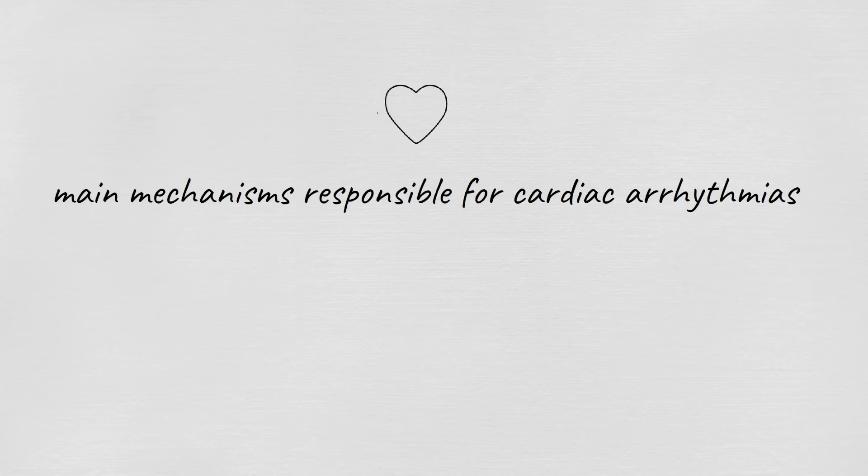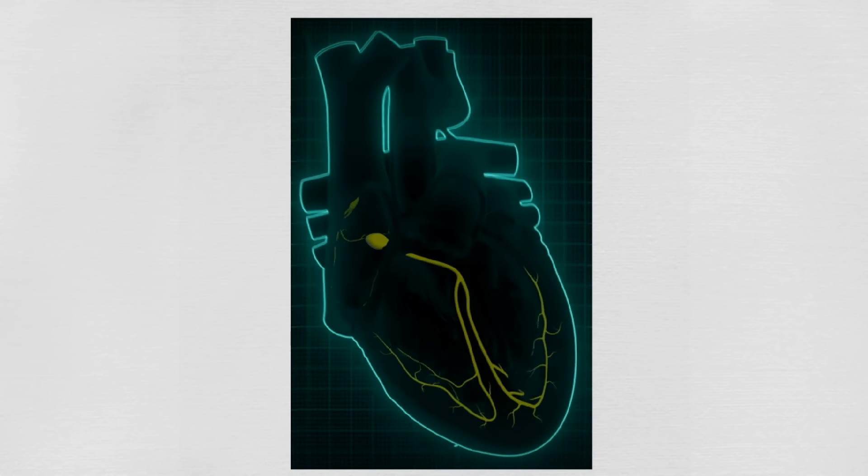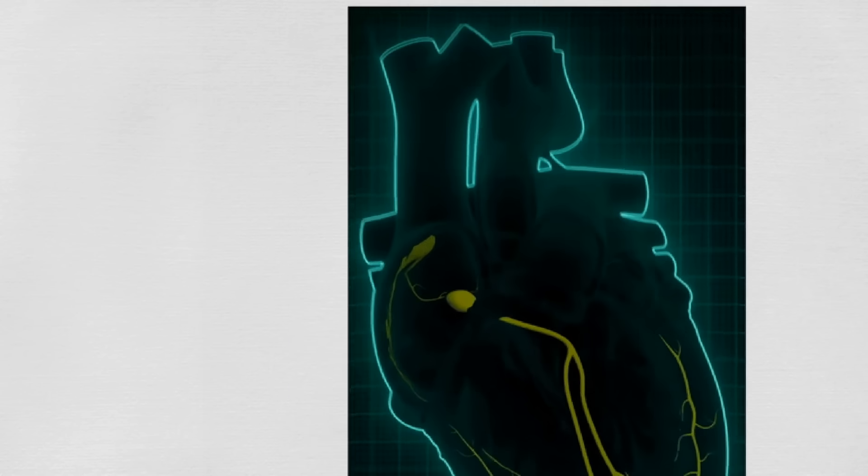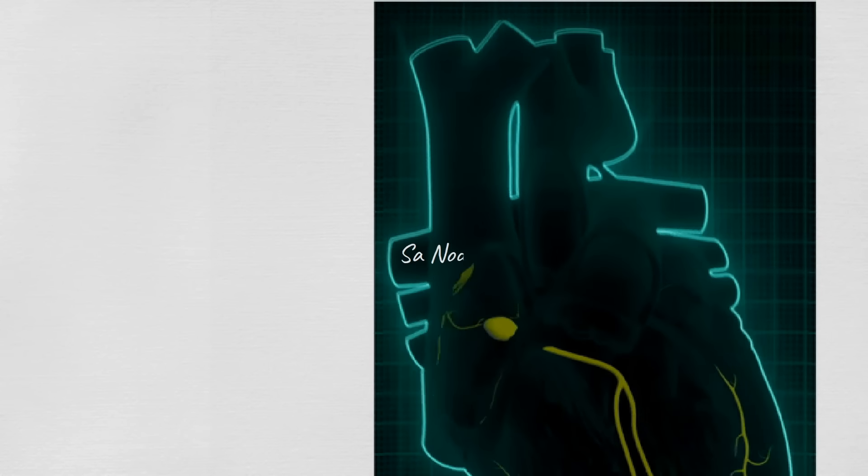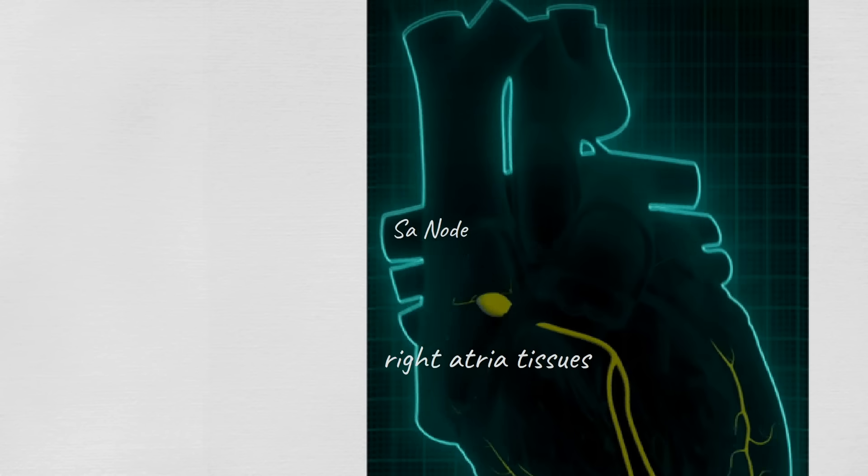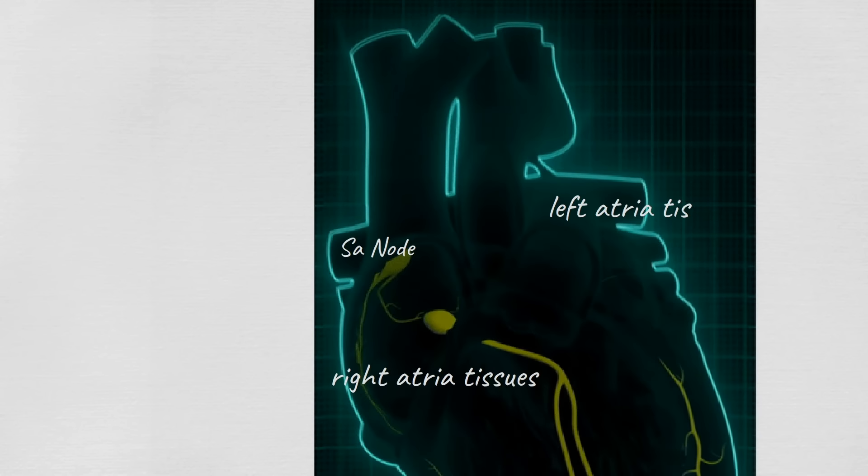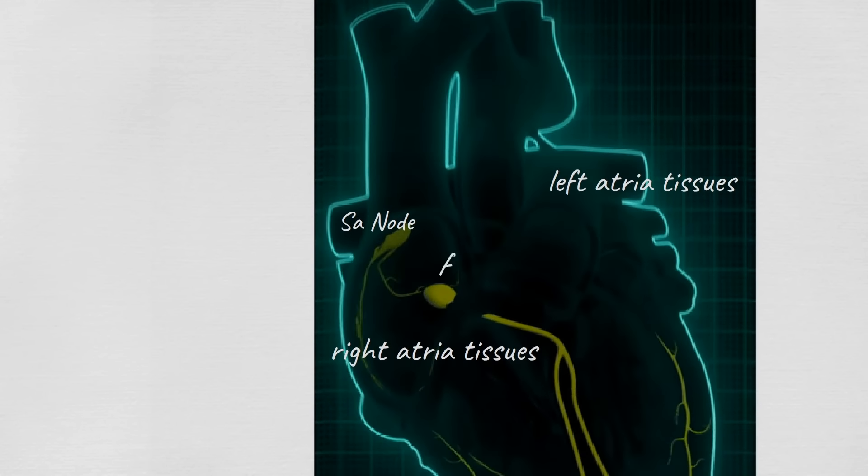The main mechanisms responsible for cardiac arrhythmias are automaticity, triggered activity, and re-entry. First, for automaticity, the autonomic nervous system controls the activity of the pacemaker. Normally the electrical impulse is generated through the SA node. The signal will travel down through the right and left atrial tissues causing them to contract.